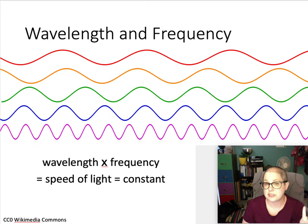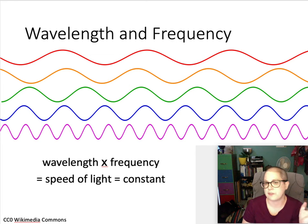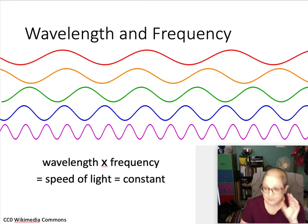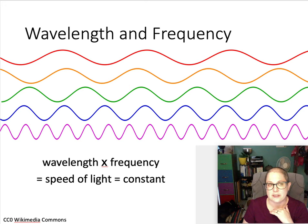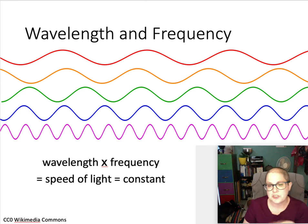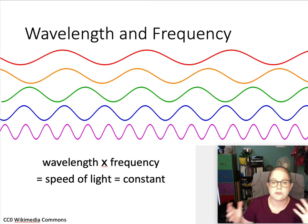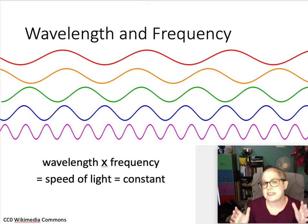For light specifically, it moves at a constant speed. All light in the universe, if it's in a vacuum, moves at the same speed. Light can slow down a little in a medium such as air or water, although the speed of light through air is fairly close to the actual speed of light in a vacuum. We typically just call it the speed of light, denoted with a small letter c, because the speed is a constant.